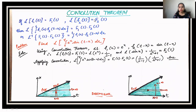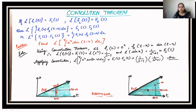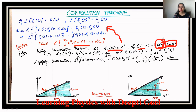Now let's study an example. We have to find the convolution of the integral from 0 to t of e^x · sin(t−x) dx. Since it is expressed in terms of t − x, we choose f₁(x) = e^x and f₂(t−x) = sin(t−x). To apply the convolution theorem, we just calculate the Laplace transform of each individual function.